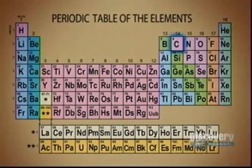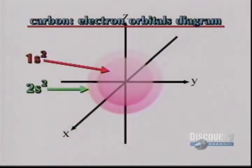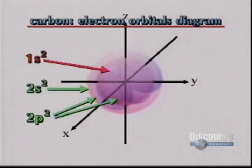Carbon is in the second row or period of the periodic table and it has the atomic number six. In its ground state, a carbon atom has six electrons in two energy levels. The outer energy level or valence level contains four electrons.